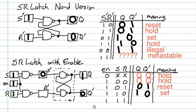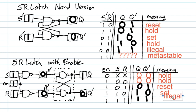The danger zone is S equals one, R equals one. Since these act like inverters, both outputs go to zero, giving S prime zero, R prime zero. Two zeros on S prime, R prime gives a one-one output, which is the illegal state. Next time you go back to hold — including using the enable — the circuit will go metastable. So the disallowed input on an SR latch with enable is all ones.